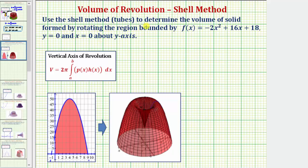We're asked to use the shell method or tubes method to determine the volume of the solid formed by rotating the region bounded by f of x equals negative 2x squared plus 16x plus 18, y equals 0 and x equals 0 about the y-axis.